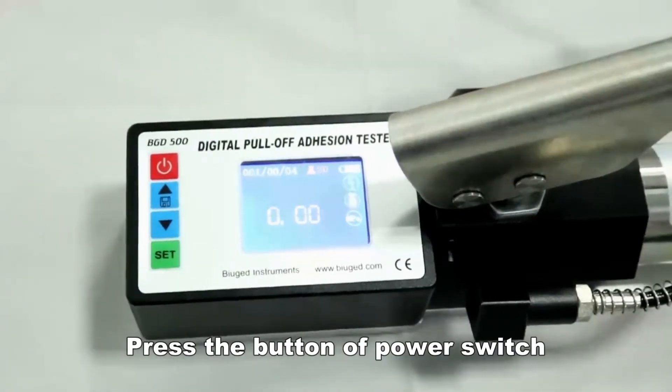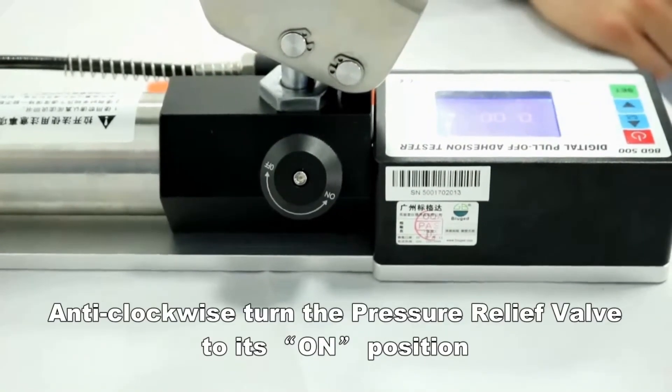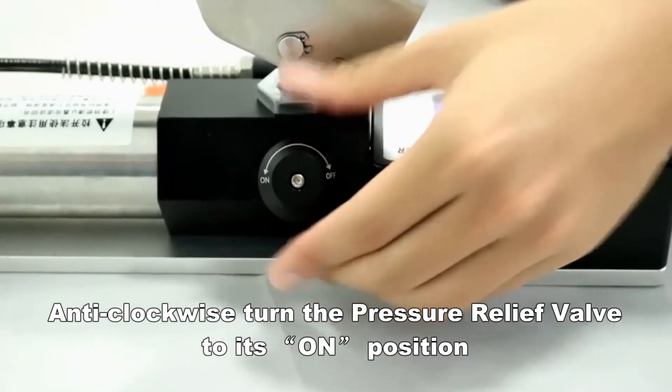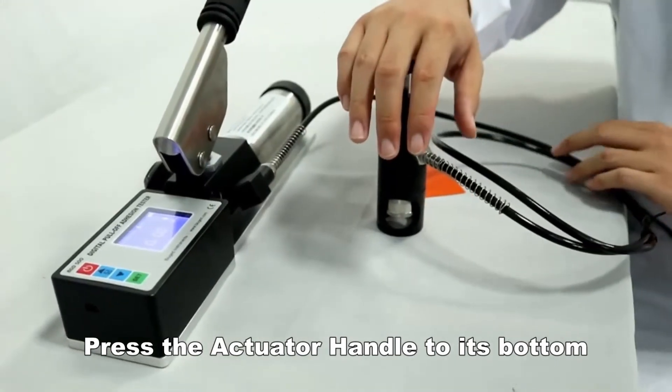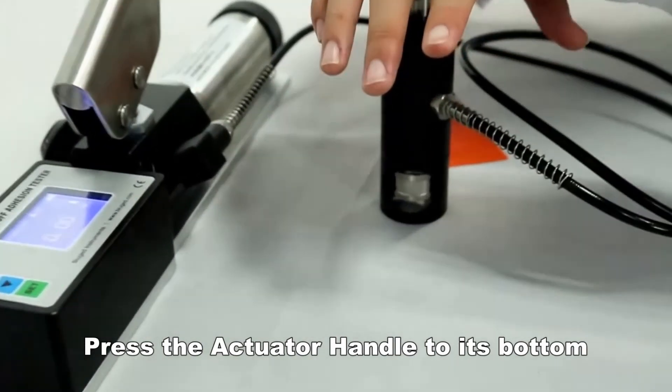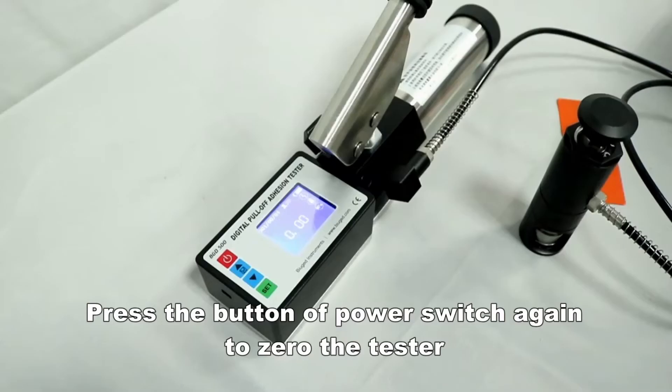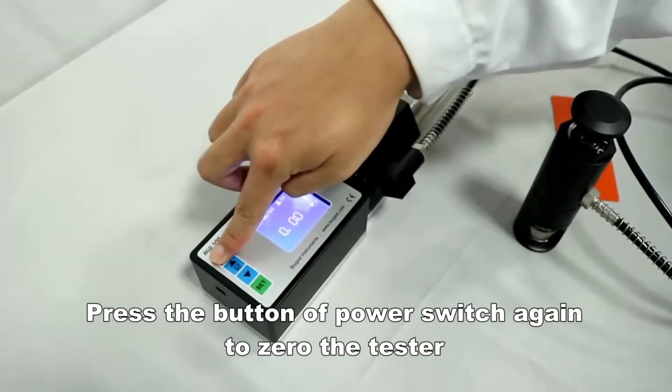Press the power button. Anti-clockwise turn the pressure relief valve to its on position. Press the actuator handle to its button. Press the power button again to zero the tester.